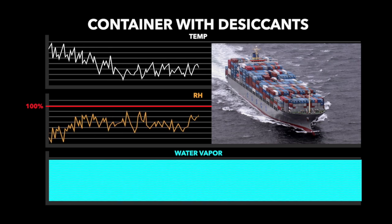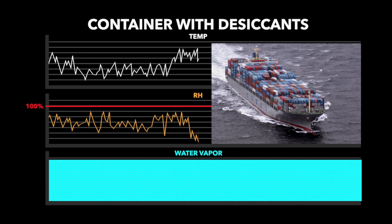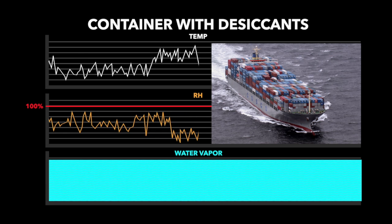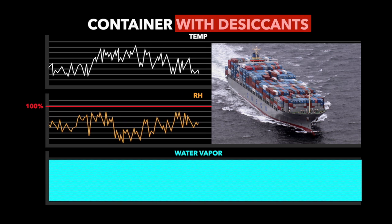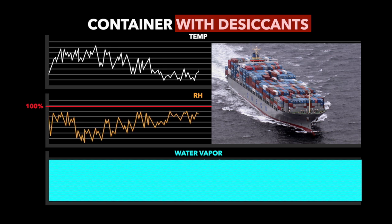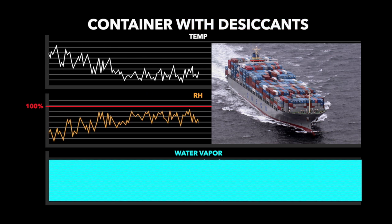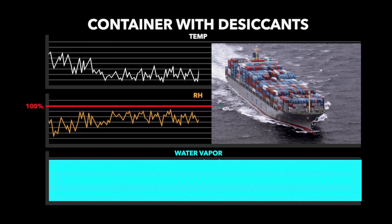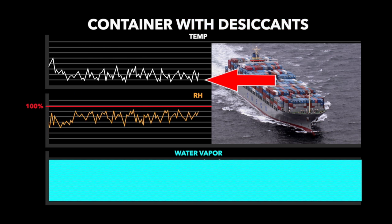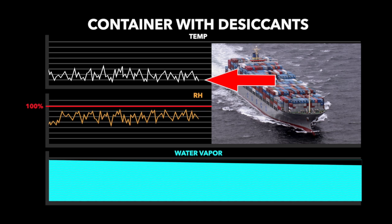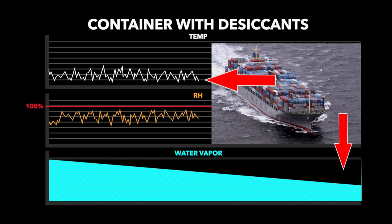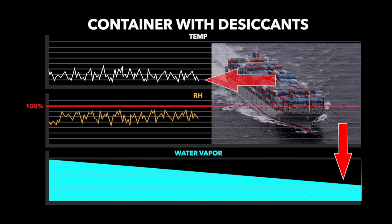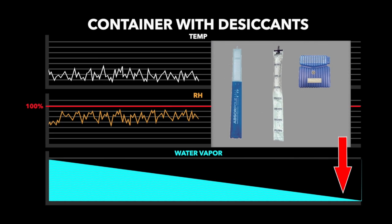These charts represent the relationship between temperature, RH, and water vapor in a container with the proper type and quantity of desiccants. During cooling cycles in a voyage, as the temperature drops in the container, today's modern desiccants will continually remove water vapor from the air. And those with built-in collectors also eliminate re-evaporation.